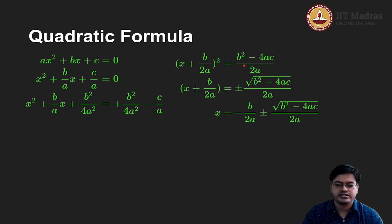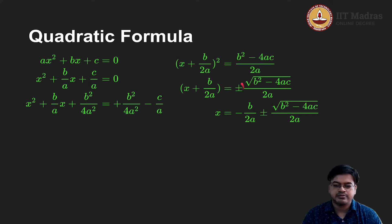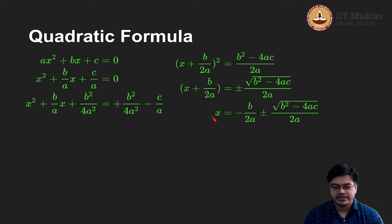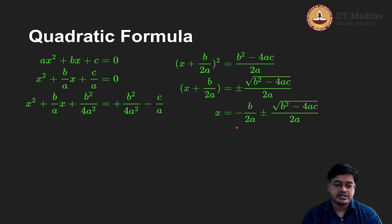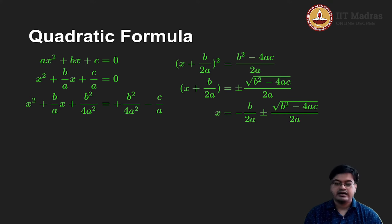It should be 4a squared, and once you take the square root of this, you get x plus b by 2a equals plus or minus square root of (b squared minus 4ac) upon 2a. So effectively, using the method of completing the square, the root of this equation is x equals minus b by 2a plus or minus square root of (b squared minus 4ac) divided by 2a. This method is very powerful — this is what we have done using completing the square, and it gives us a general formula called the quadratic formula.